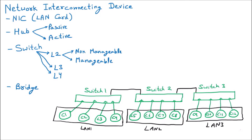The problem happens when C1 wants to send data to C11. First, it goes to its switch, which checks whether C11 is in its own network — it is not. So it routes outside and sends the data to the next switch, which also checks and does not find C11, forwarding it to the next switch, which finds C11 and delivers the data.